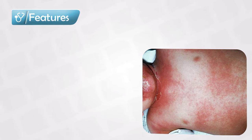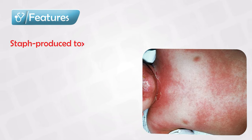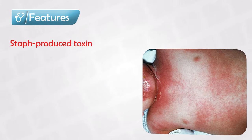Staphylococcal Scaled Skin Syndrome is caused by Staphylococcus. The bacteria can produce a toxin that directly affects the skin. This toxin attacks the corneodesmosine attachment in the stratum granulosum layer, causing separation in the skin.